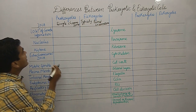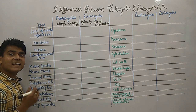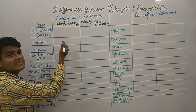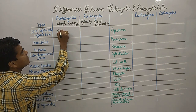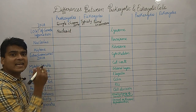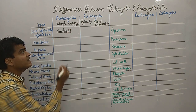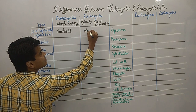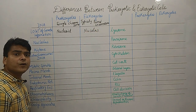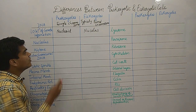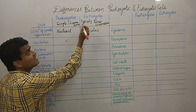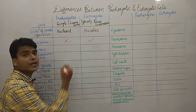Looking at the location of genetic information: in prokaryotes it is present in the nucleoid, whereas in eukaryotes genetic information is present in the nucleus. Regarding the nucleolus, it is absent in prokaryotes but present in eukaryotes.